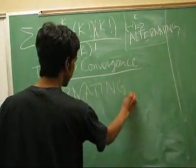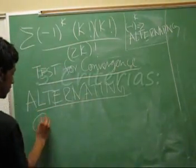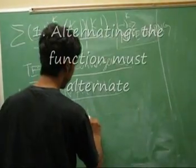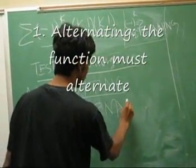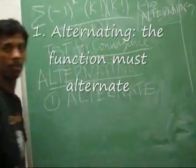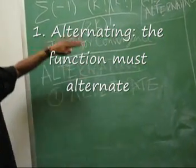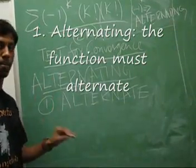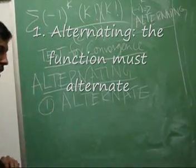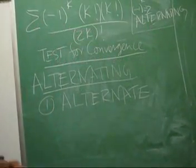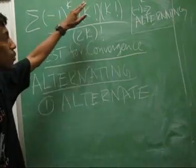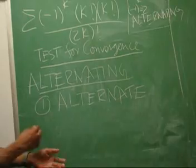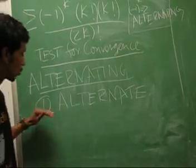For the Alternating Series Test, there are three criteria and all three must be met for the series to be convergent. Rule number 1: it must alternate. The word alternate means negative 1 to the k — terms alternate positive, negative, positive, negative. Negative 1 to the k plus 1 is the same thing; it just alternates differently, but it's still alternating.